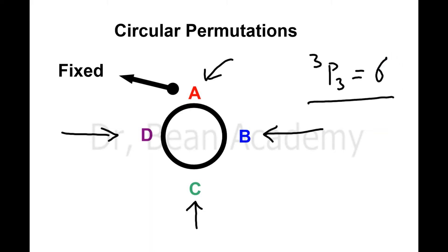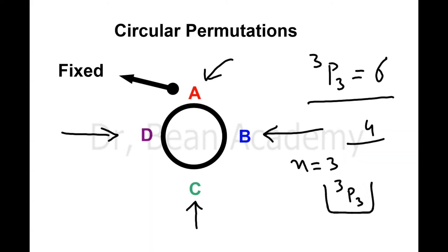So we can make 6 circular permutations. The difference from normal permutations is: if you are given four choices, just decrease N by one — take it as three — and then calculate all possible permutations among them. That total will be the number of circular permutations. You skip one because you fix one as a reference.